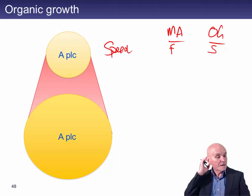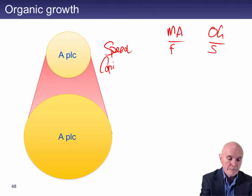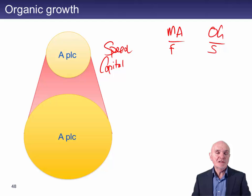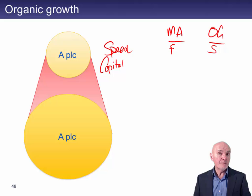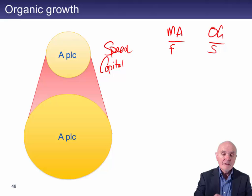The second characteristic is need for capital. Merger and acquisition requires immediate capital, either cash or the issue of shares, to acquire the company. Whereas organic growth could be funded by retained profits, and can often be spread over a number of years even if you're raising external capital. So M&A is fairly immediate, whereas organic growth is more gradual.